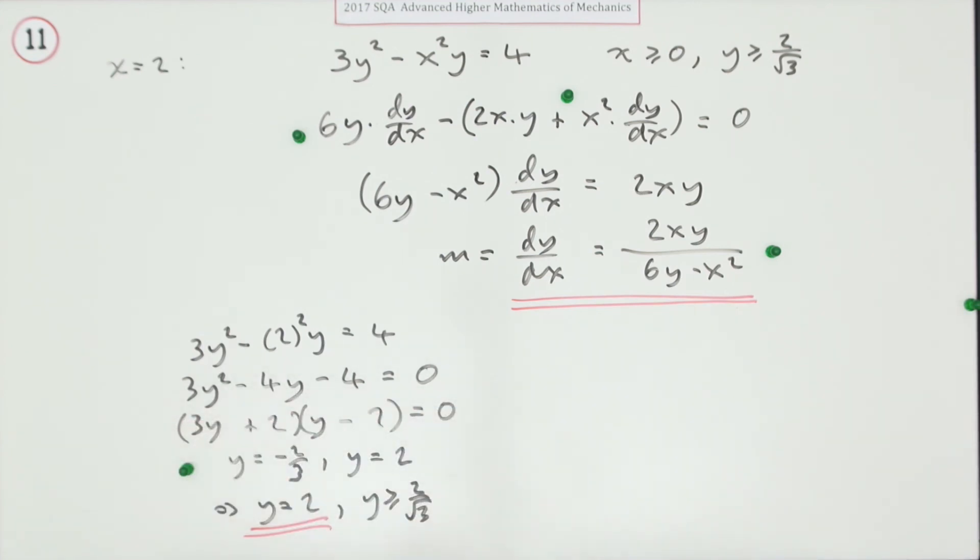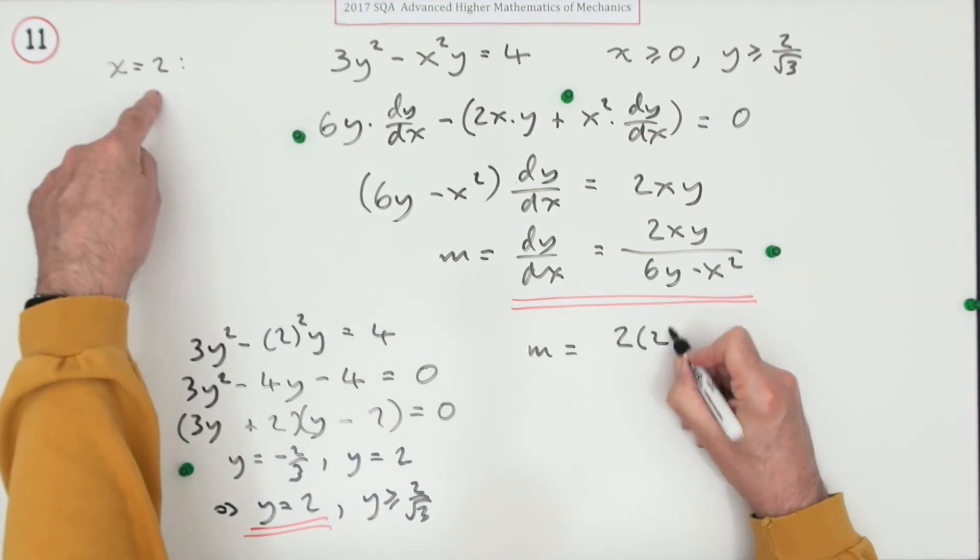There's a mark for finding y and selecting the appropriate value. Now for the gradient, put it all together: m = 2×(2)×(2).